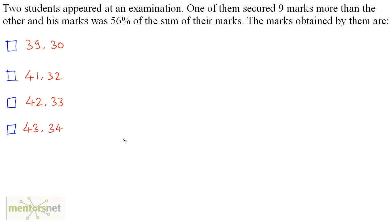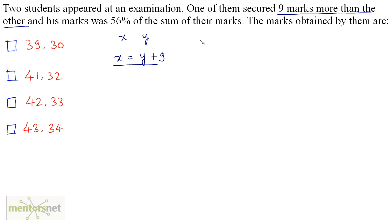Two students appeared at an examination. One of them secured 9 marks more than the other and his marks was 56% of the sum of their marks. Let the two students' marks be x and y. Since one secured 9 more than the other, x equals y plus 9. Also, x equals 56% of the sum of their marks, so x equals 56 upon 100 times x plus y.